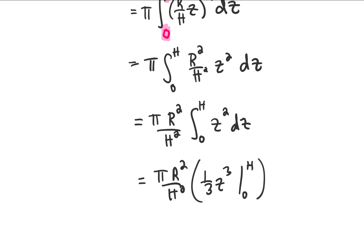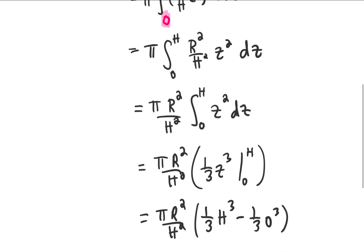Now to complete this integral, we need to plug in the upper limits of integration. We're going to replace z with H, we're going to subtract, and we're going to plug in the lower limit of integration. That's going to give us this line right here.